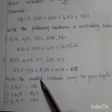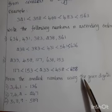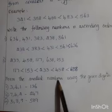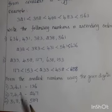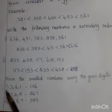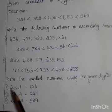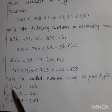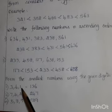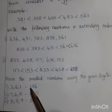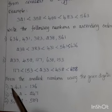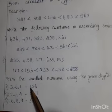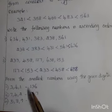Form the smallest numbers using the given digits. Smallest numbers means migachiriya engal. Given digits: 3, 6, 1. Students, which is the smallest number? Number 1. So first we write number 1, next 3, next 6. So 136 is the smallest number.